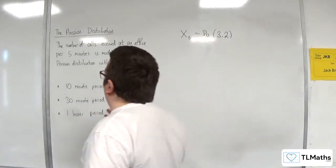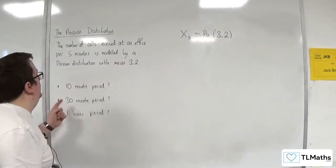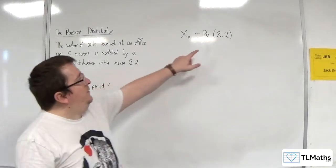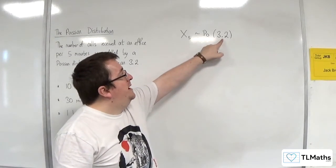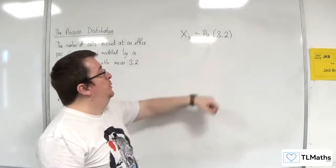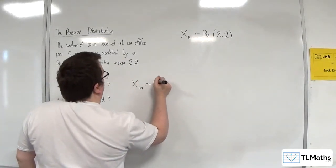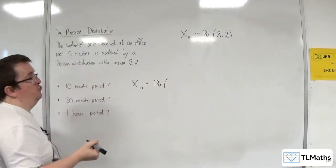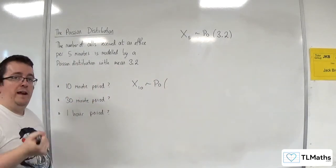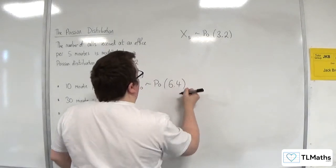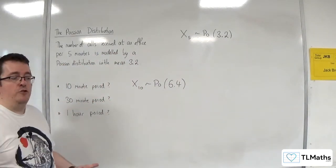So let's say I want to know, what's the distribution I should use if it's a 10-minute period? Well, if that's the average over a five-minute period, 3.2, then over a 10-minute period, you would expect it to be a Poisson distribution, but now with an average of 6.4. You've doubled the amount of time, and so you would double the average.